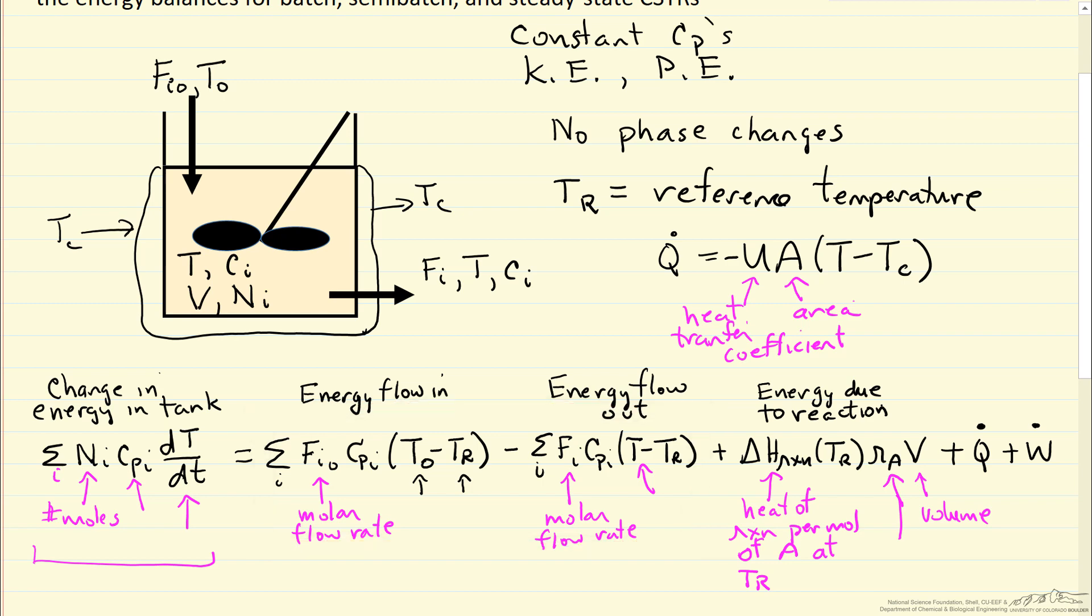And if we ran a semi-batch reactor, then perhaps there's energy flow in but not energy flow out. So we might end up crossing out one of these terms, just depending on how the system is set up. There could be no energy flow in but there could be energy flow out, for example.